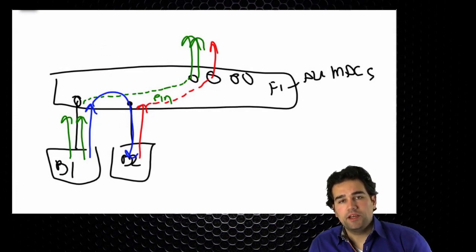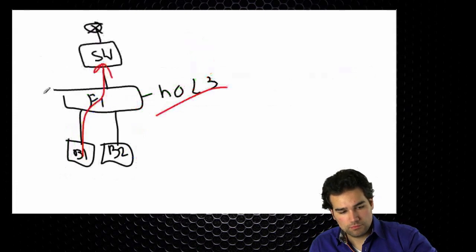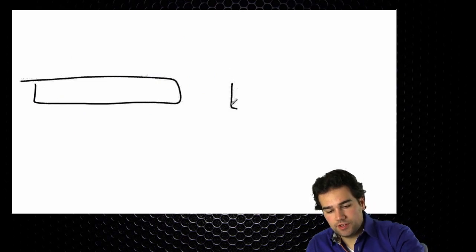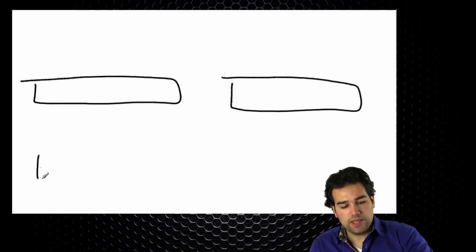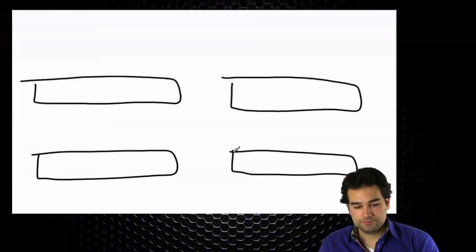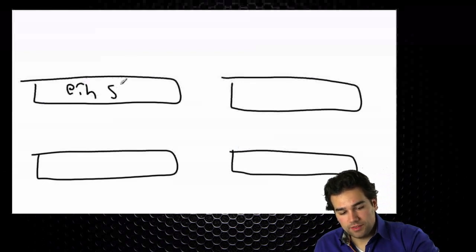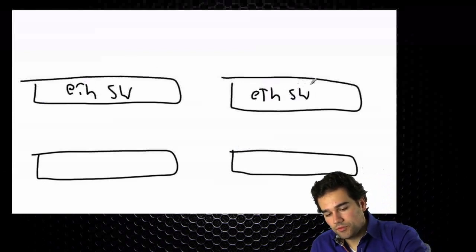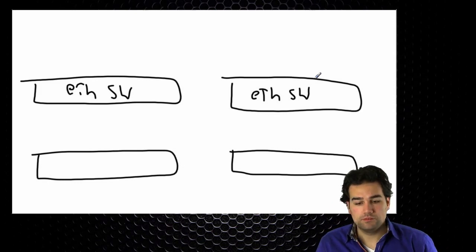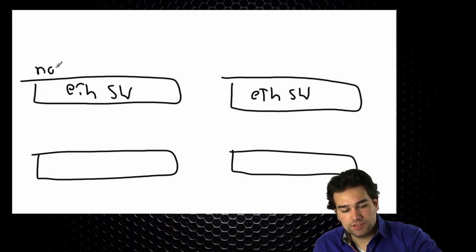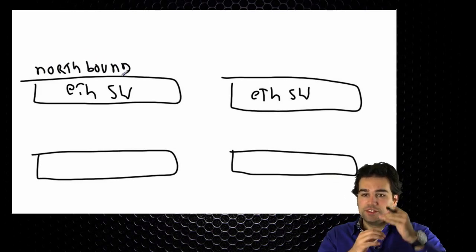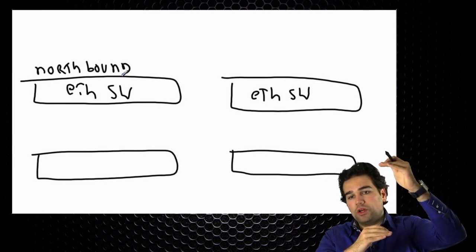How do I connect my network? Not talking about server connections right now, just uplinks. Let's say I have two fabric interconnects and two network switches — talking about Ethernet first. These are my uplink Ethernet switches: my top-of-rack switches, end-of-row switches, any switch you can think of. I call it the northbound switch because it's on top of the fabric interconnect — north of it. The servers are considered southbound connections.